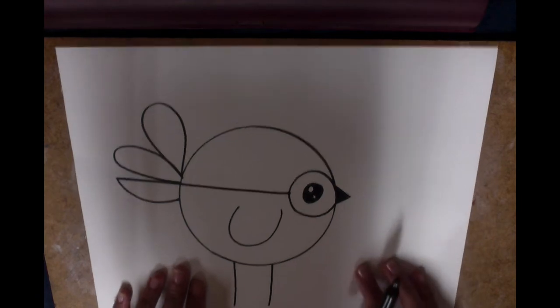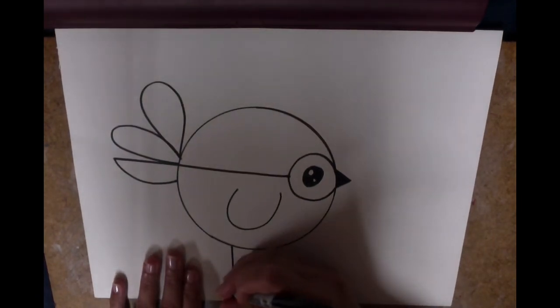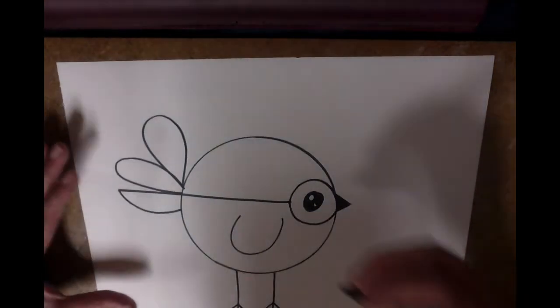And now I'm going to draw two bird legs. You've done this before. Just two sticks, as long or as short as you want, with a couple of toes. And congrats, you've drawn a little bird.